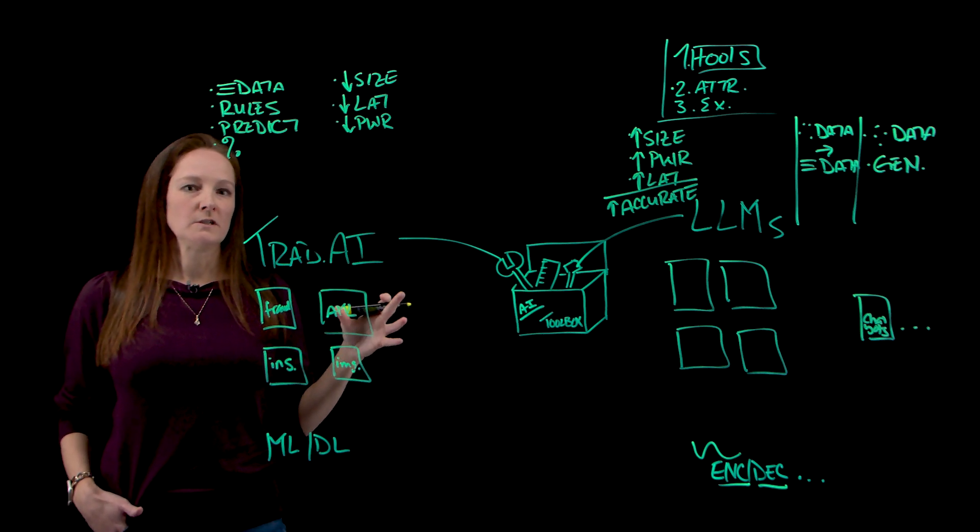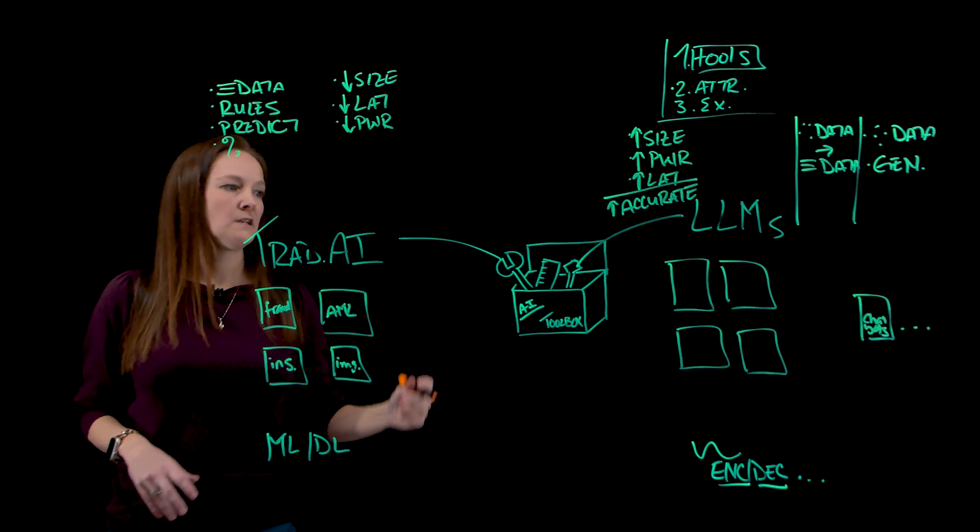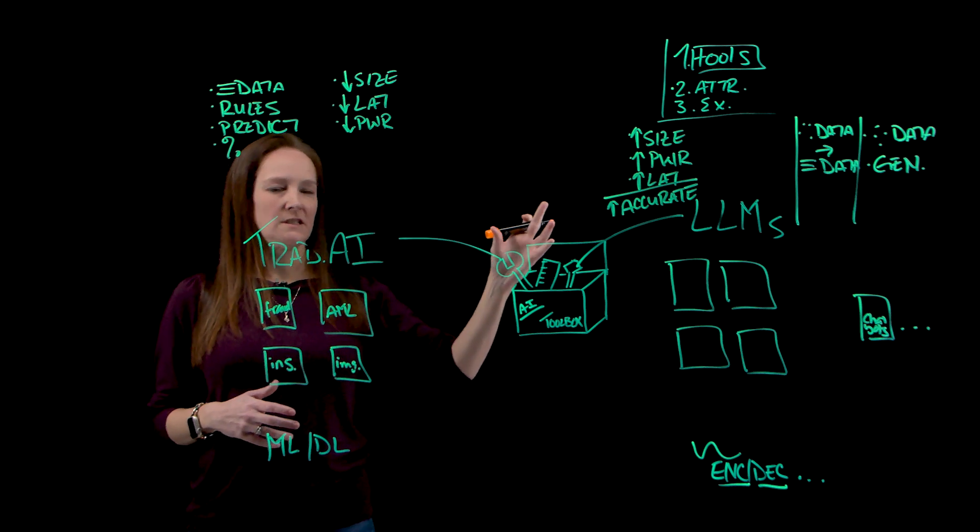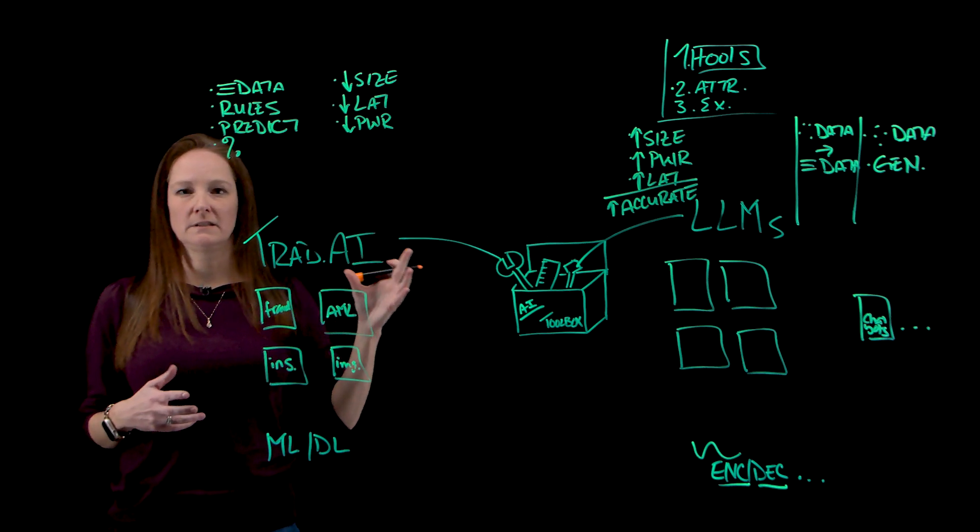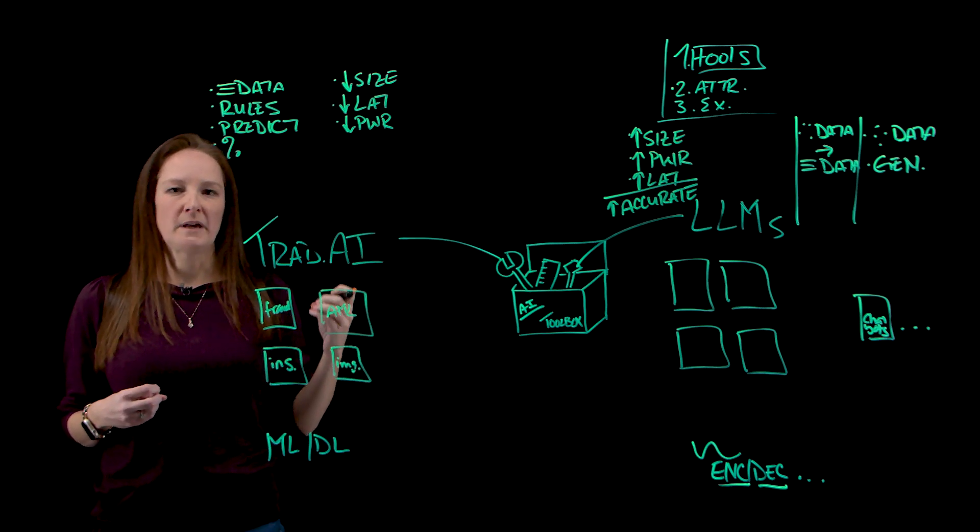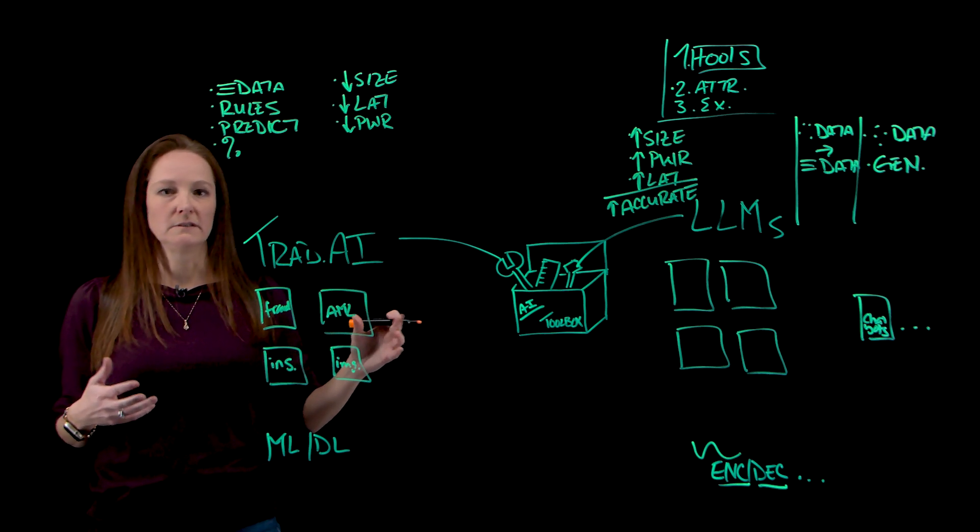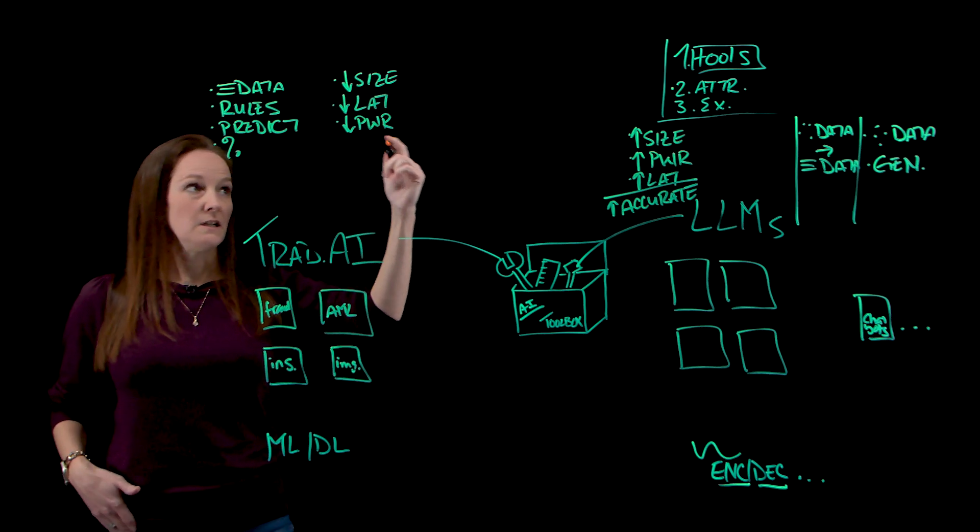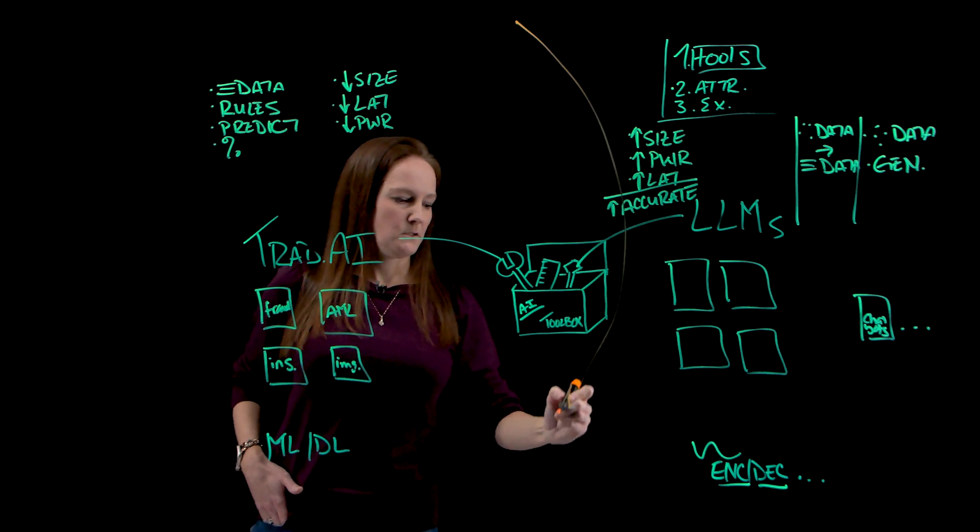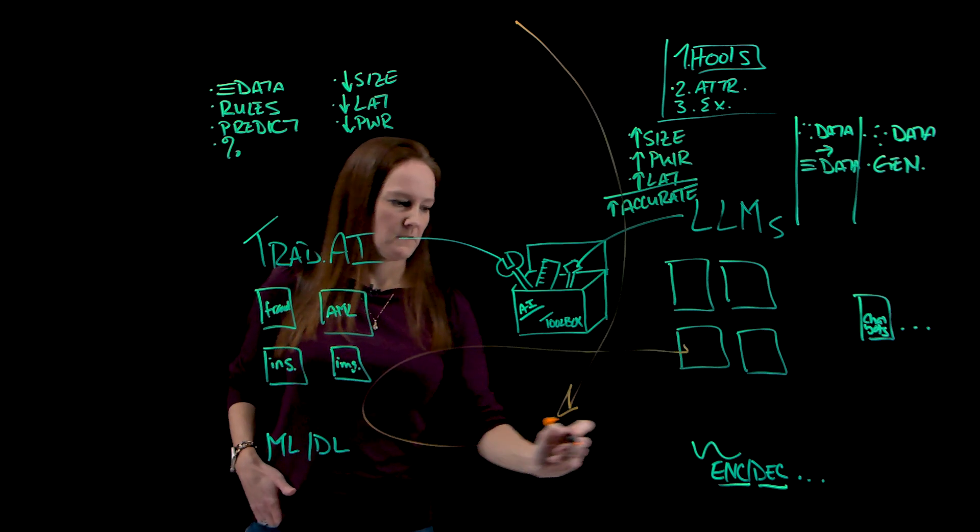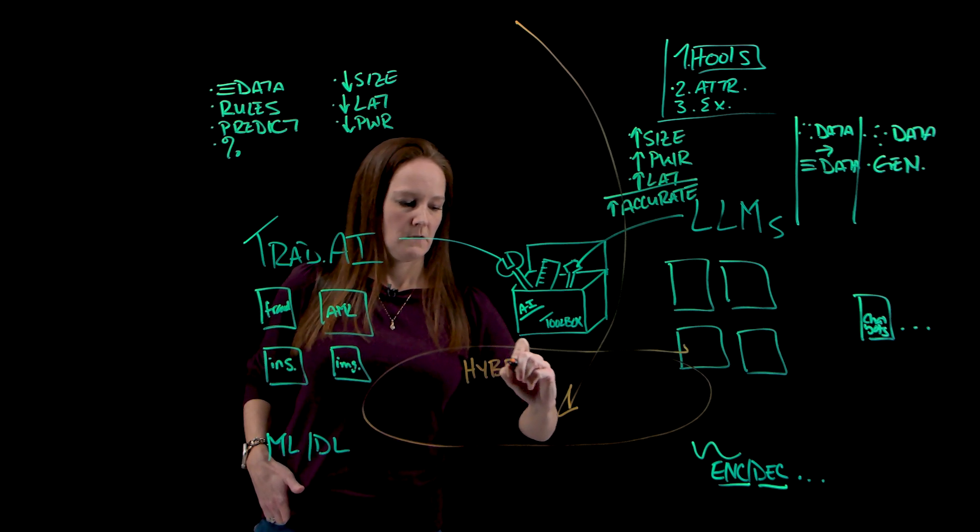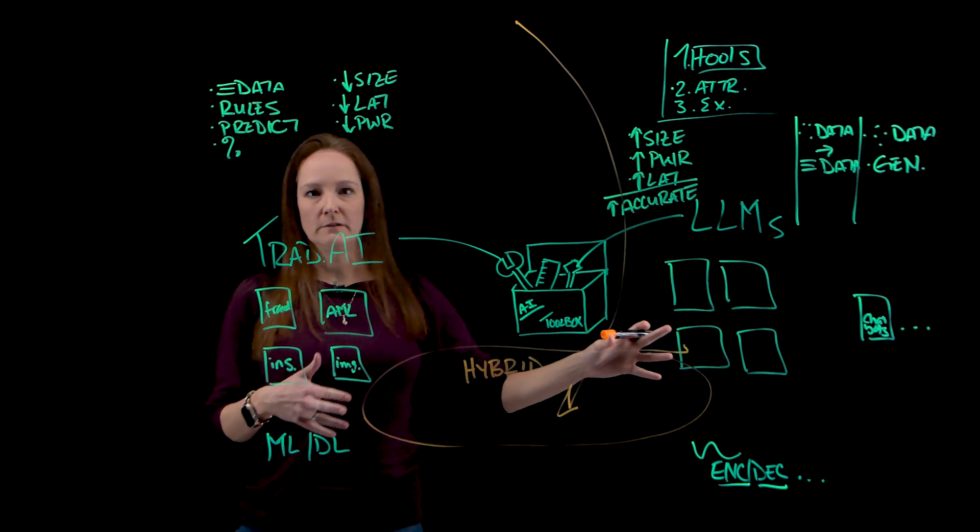So you can start to see, as you look at the different characteristics, the different strengths of these models, that depending on the situation, you may want to use a different model type. So this technique allows you to live in this hybrid world model, where you can have multiple models.